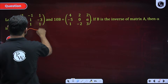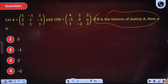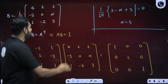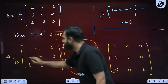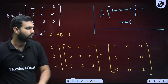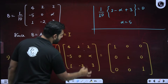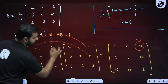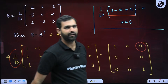Next question: matrix A is given, and 10B is given as some matrix where B is the inverse of A. So B = (1/10) times that matrix. Since B is the inverse of A, the product AB must be the identity matrix. The catch is — don't multiply the whole thing. We only need alpha. Take the first row of A and the third column of B: 2 - alpha + 3 divided by 10 should equal 0. This gives alpha = 5.